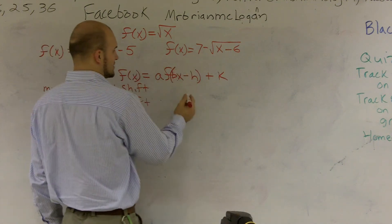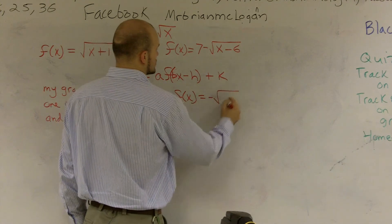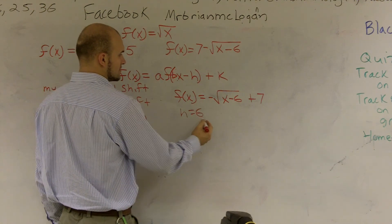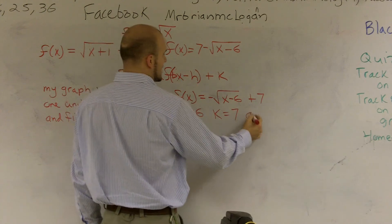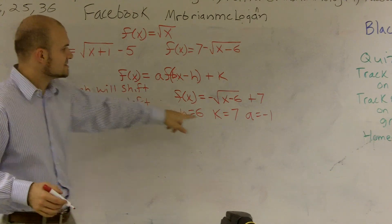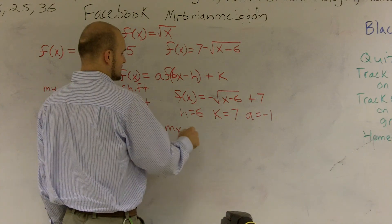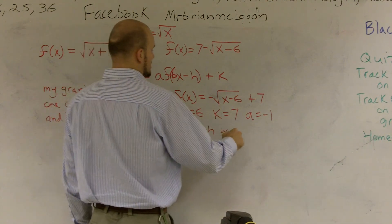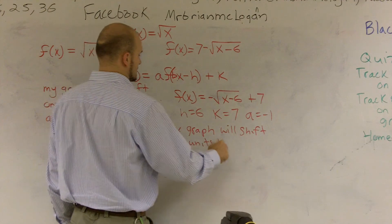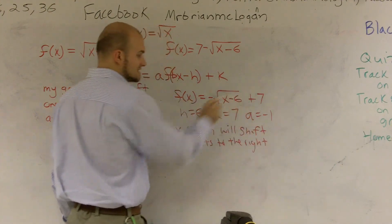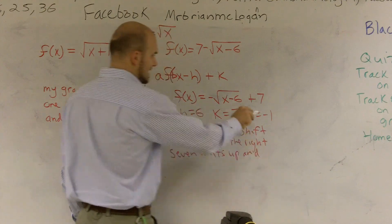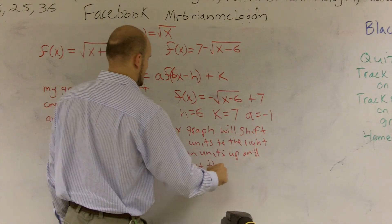I'm going to rewrite this second function as f of x equals negative square root of x minus 6 plus 7. Therefore, my h is equal to 6, my k is equal to 7, and my a is equal to negative 1. The a value of negative 1 tells me it's going to reflect about the x-axis. So my graph will shift 6 units to the right, 7 units up, and reflect about the x-axis.